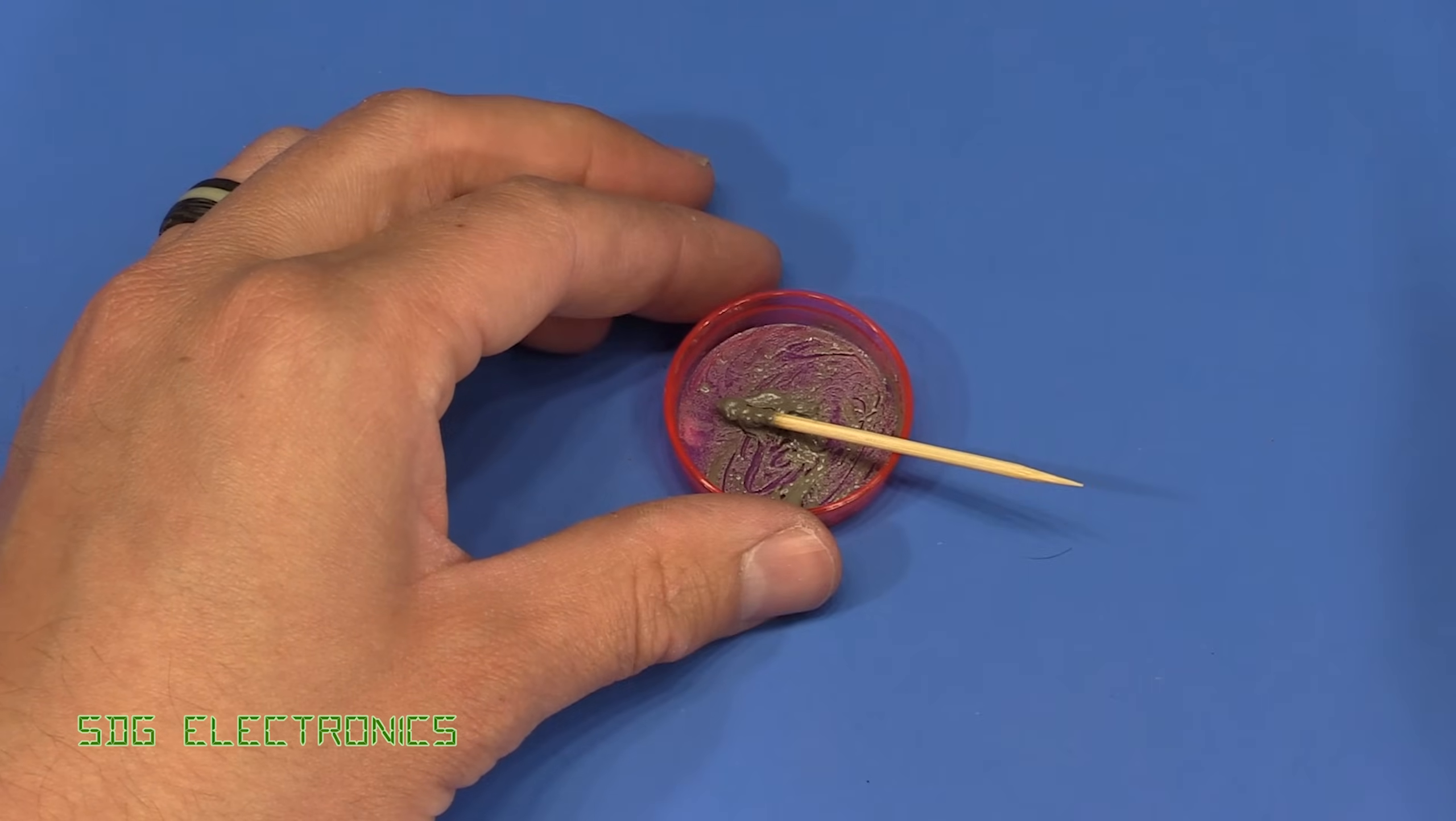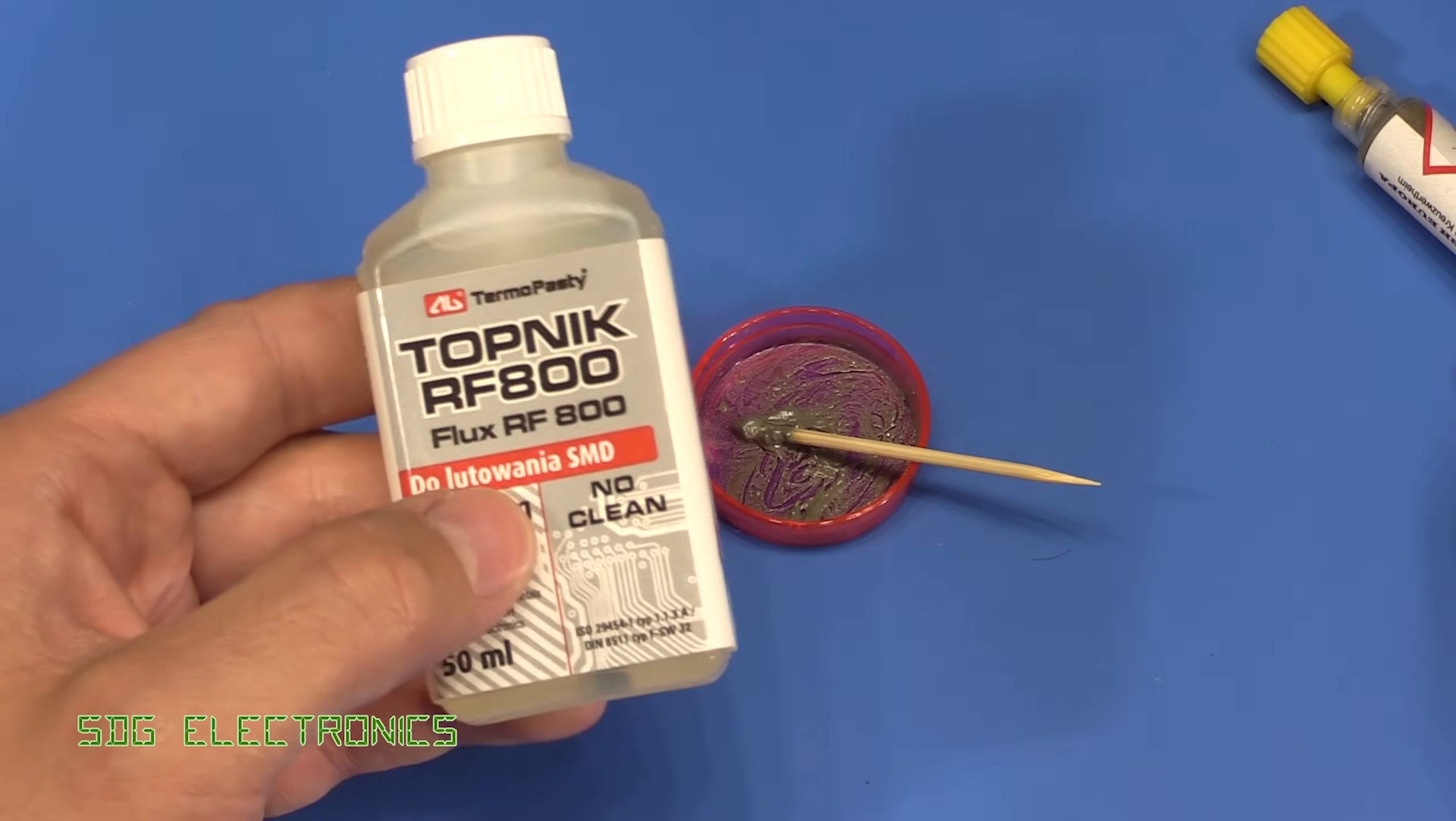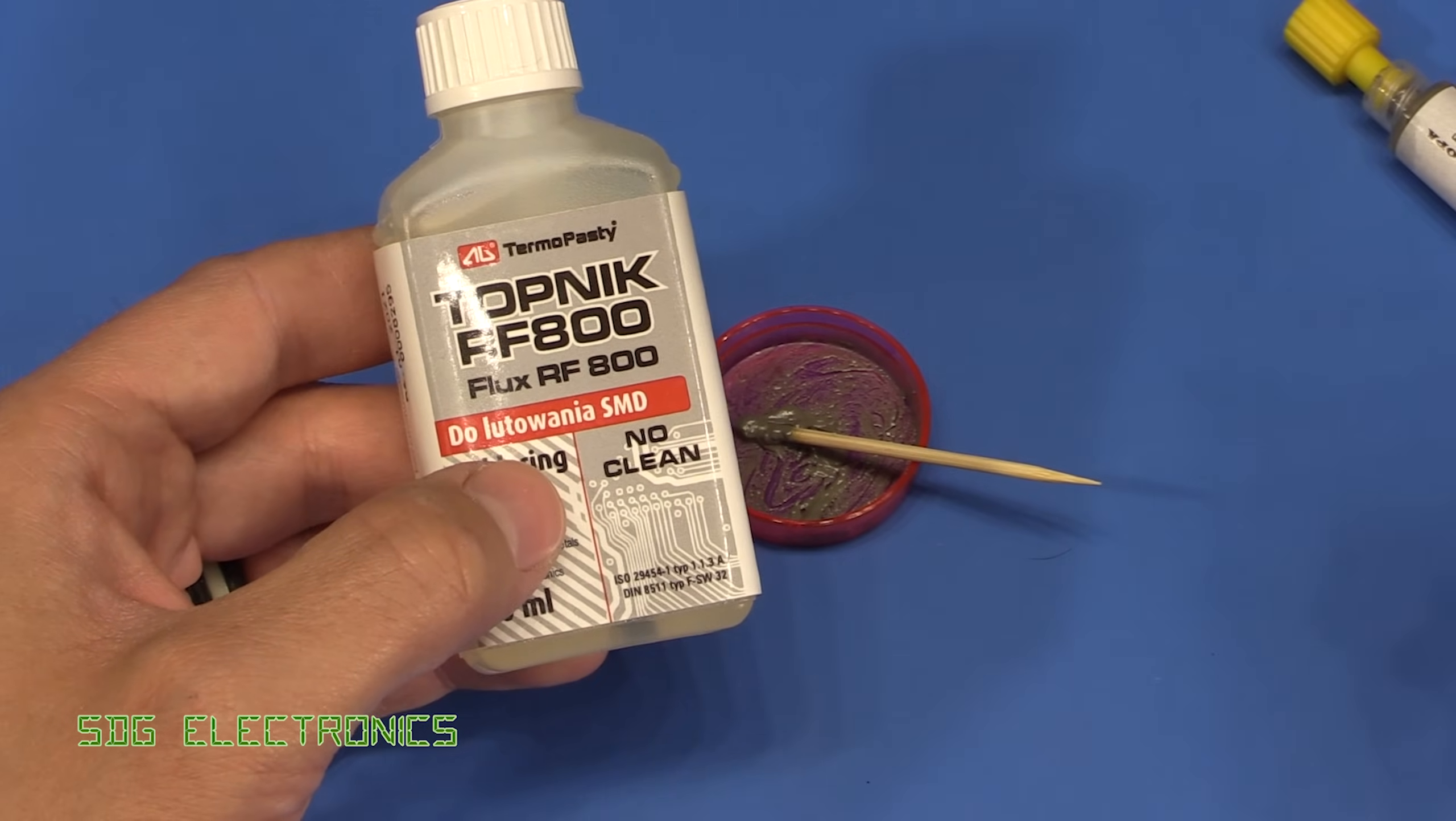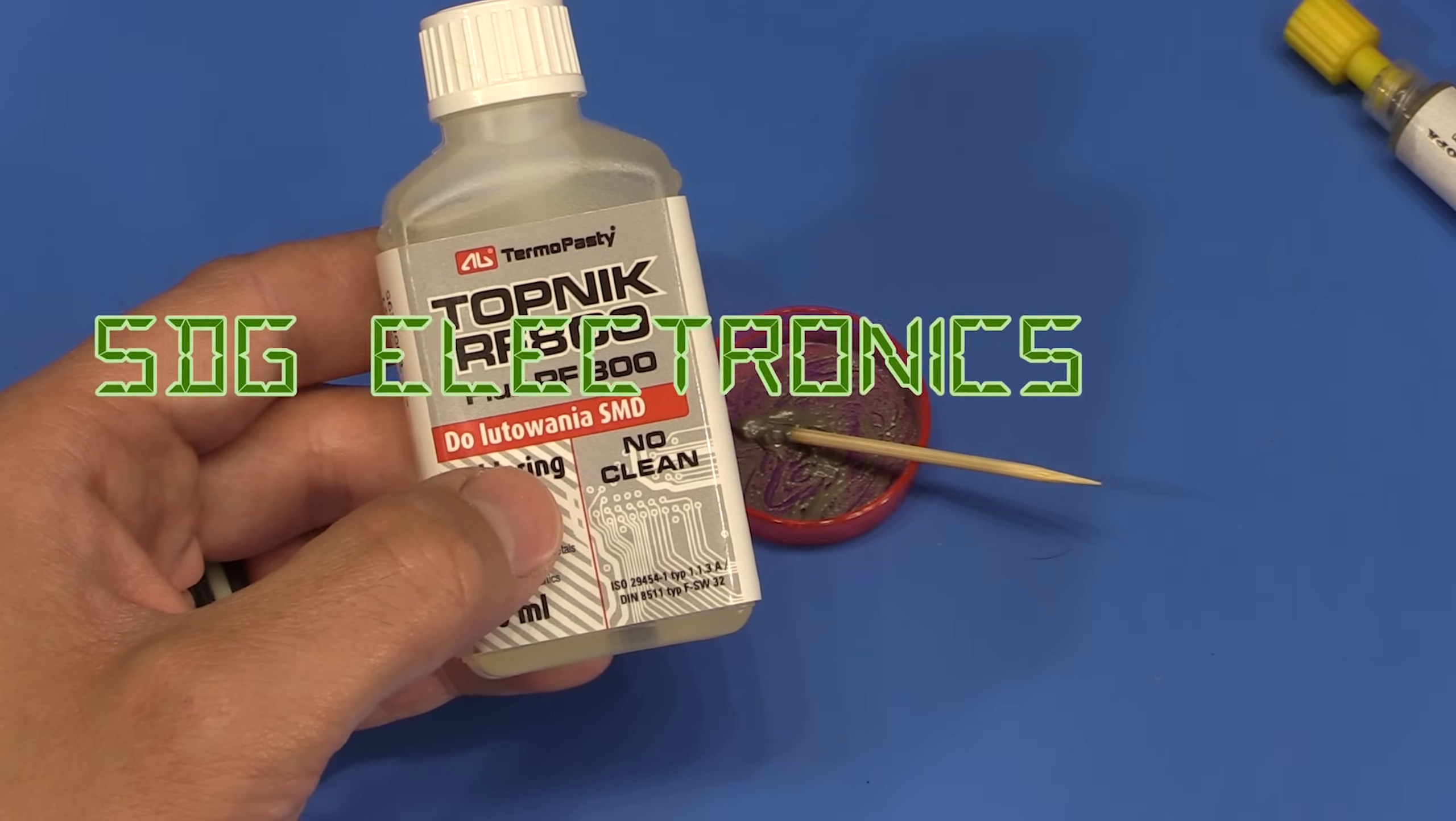That's just a little tip if you don't want to throw out your solder paste and get a new one all the time. Just use a bit of no-clean liquid flux, and you'll have a workable solution again. Hope you found that useful. Until next time, thanks for watching.